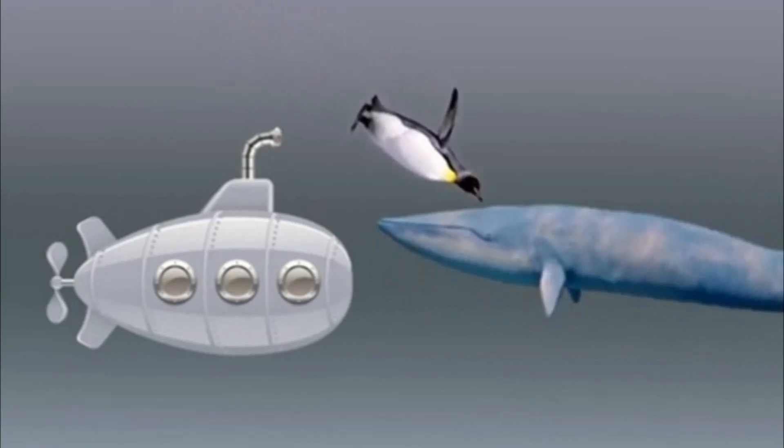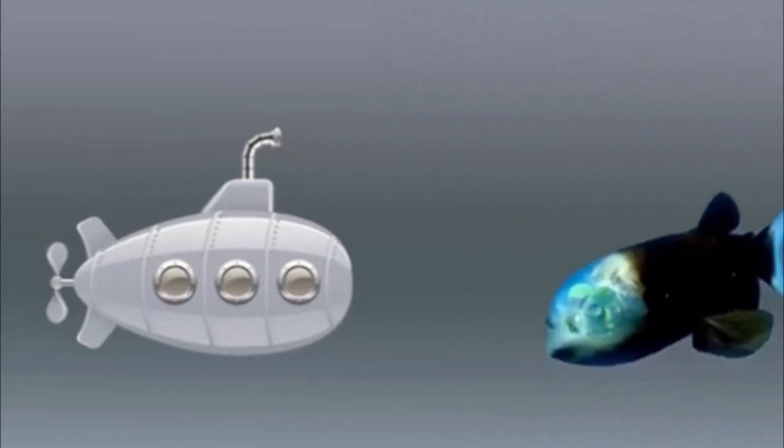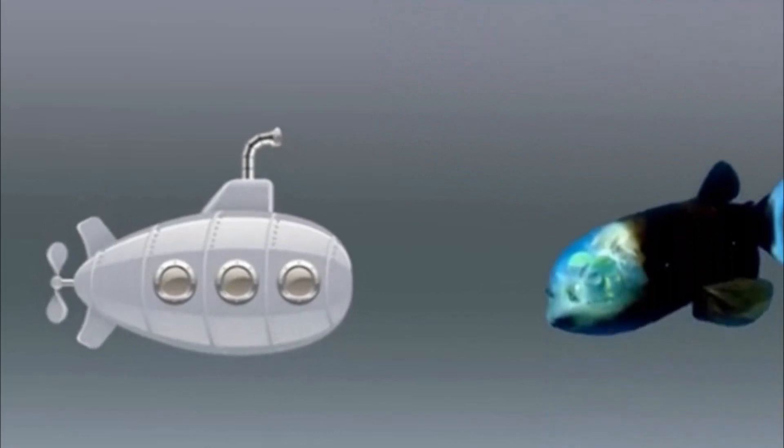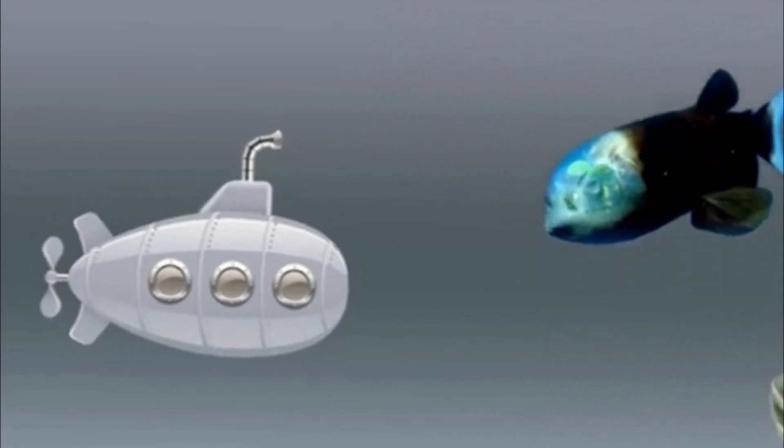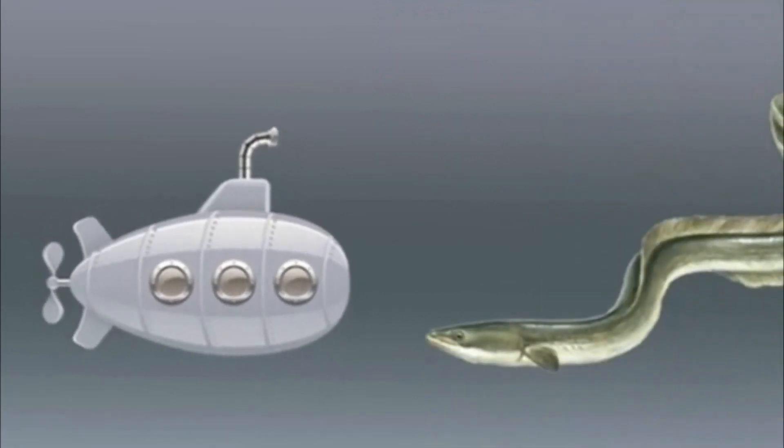At 600 meters below the surface, you'll find the barrel-eye fish with a transparent head and eyes that can only look upward. At 700 meters, the territory of European eels begins, with the largest individuals reaching 1.4 meters. At 900 meters, the giant squid is active, with a body length of up to 20 meters.